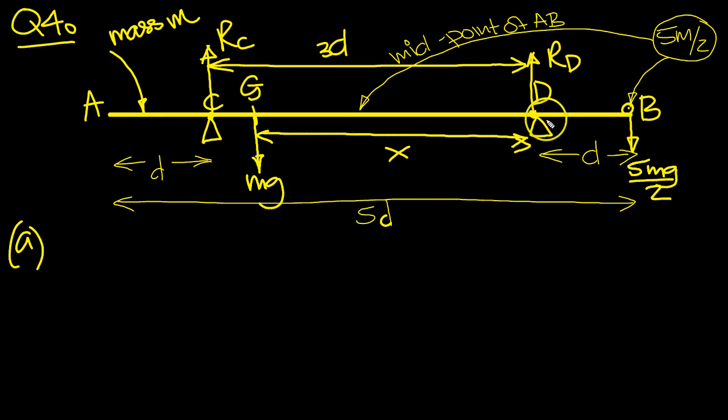On the point of tipping around D when this weight is placed at B, the reaction at C will tend to 0, or be 0. So here, RC equals 0. Let's take moments around D, and that should give us the answer.